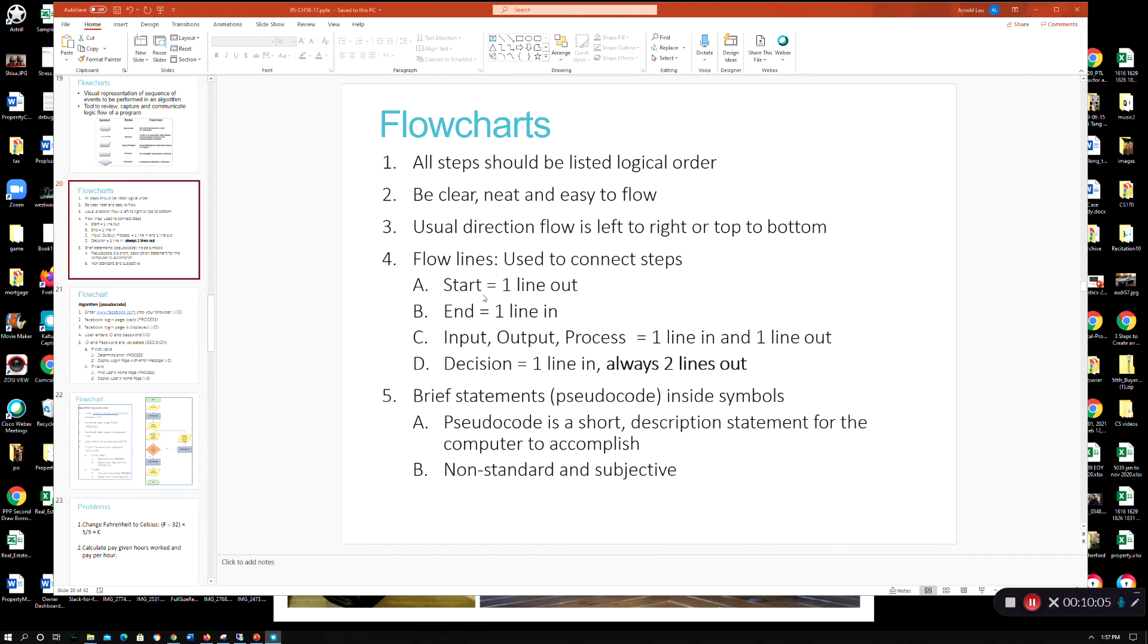The flow lines, so regular flow, not the decisions, just the regular flow. So you have one line out, one line in, and all your input, output, process is one in, one out. Remember what I said about the decision, the diamond. One line in, you see it's even bolded here. Always two lines out. Don't do something different. Two lines out, that's an important thing there. And you can do like pseudocode. We're going to do pseudocode in a little bit too.